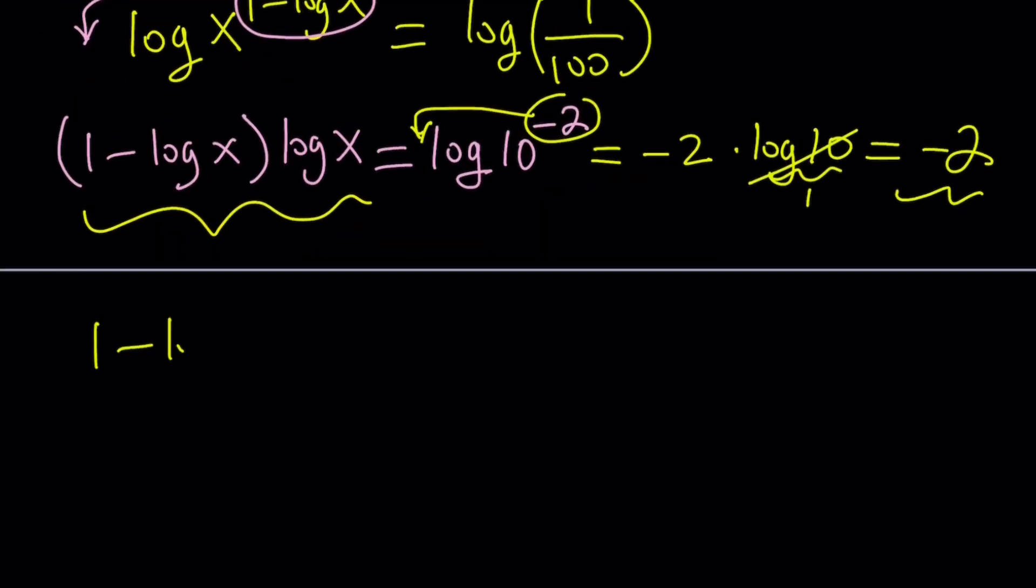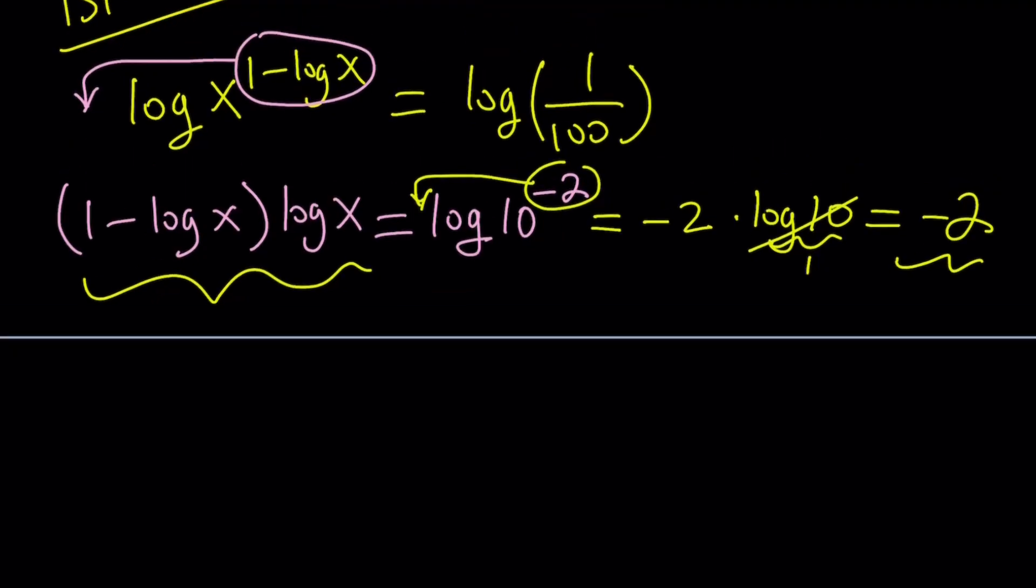So we got this equals negative 2. Let's go ahead and rewrite it. 1 minus log x. Actually, instead of rewriting it, let's go ahead and distribute, and then set it equal to negative 2. So, we'll take one more step. 1 times log x is log x minus log x times log x can be written as log x squared. Some people write log squared x, but that notation is not universal or very standard, so I'm not going to use it.